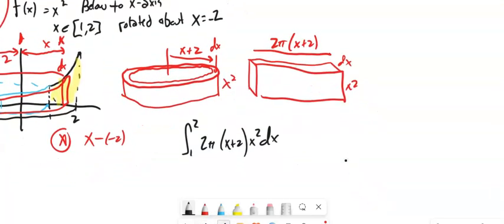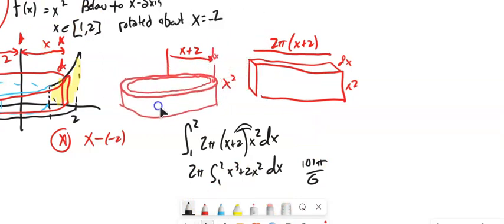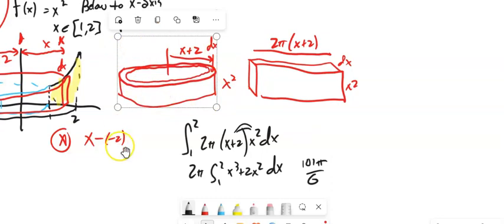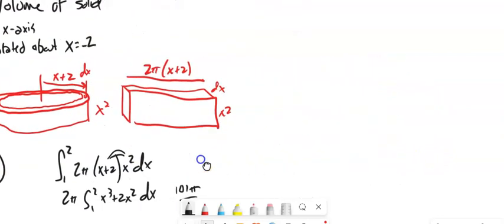From there I can go ahead and do that integral. Pull the 2π out, distribute x-squared: you get x-squared plus 2x-squared times dx, and you'll get 101π/6. What I'd like you to notice is that when we do our setup, sketches are going to help a lot. You can't just assume it's always your offset minus whatever you're rotating around — drawing the picture gives you really good perspective.